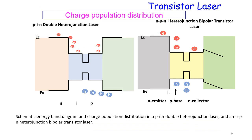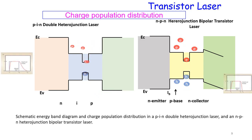Using these band gap engineering techniques, germanium can be used as a direct band gap material. For the optical source, we use a transistor laser as the device. Looking at the charge population of the transistor laser versus the diode laser, the speed of the recombination process and the rate at which photons escape the cavity is much faster in the transistor laser.